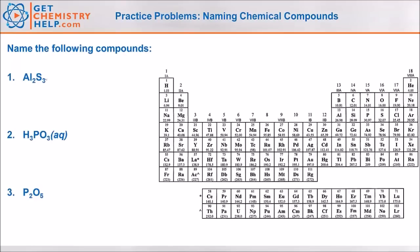Number one, Al2S3. Is that an ionic compound? Is it molecular or is it an acid? Because again the way we name the three types is totally different. So Al and S.